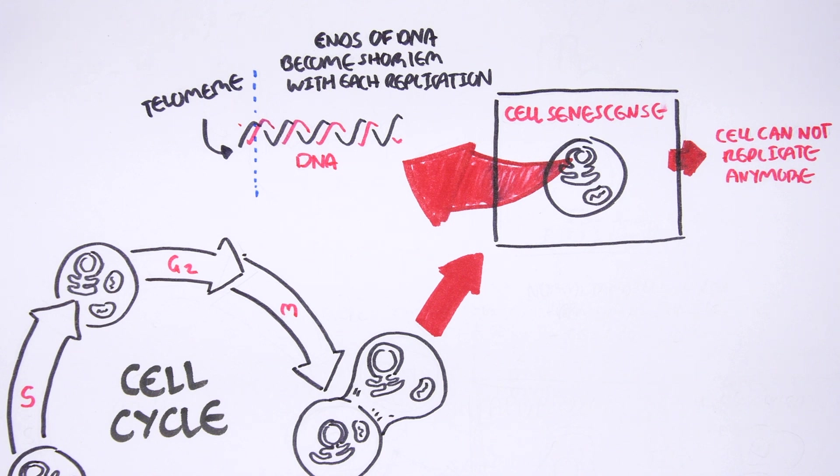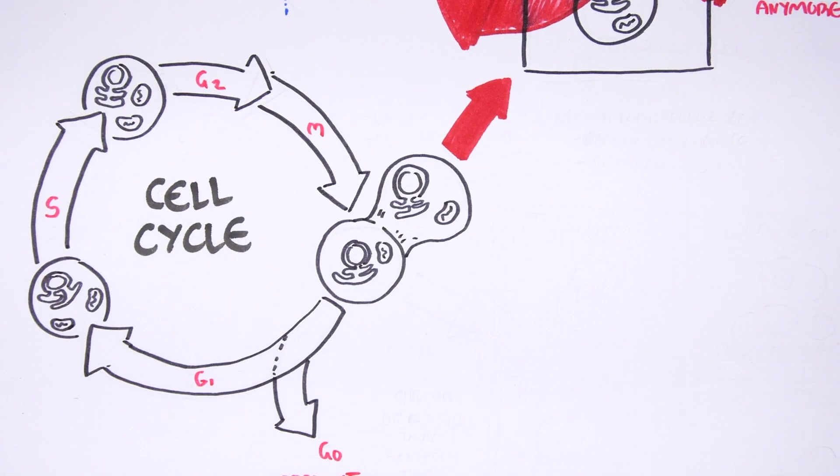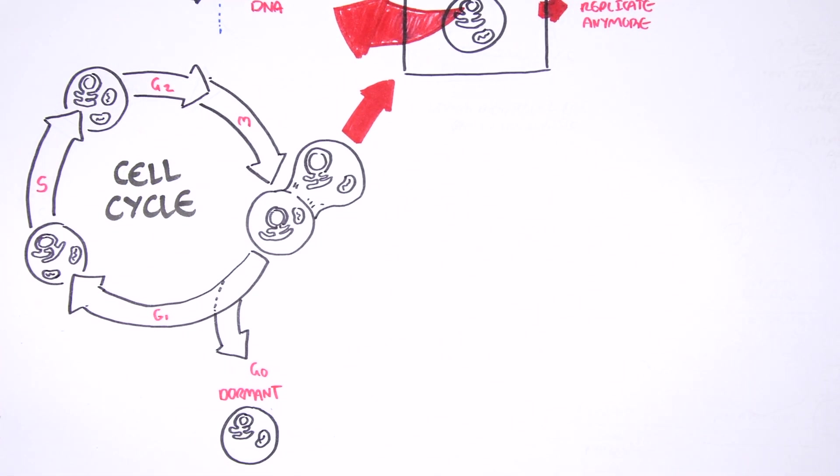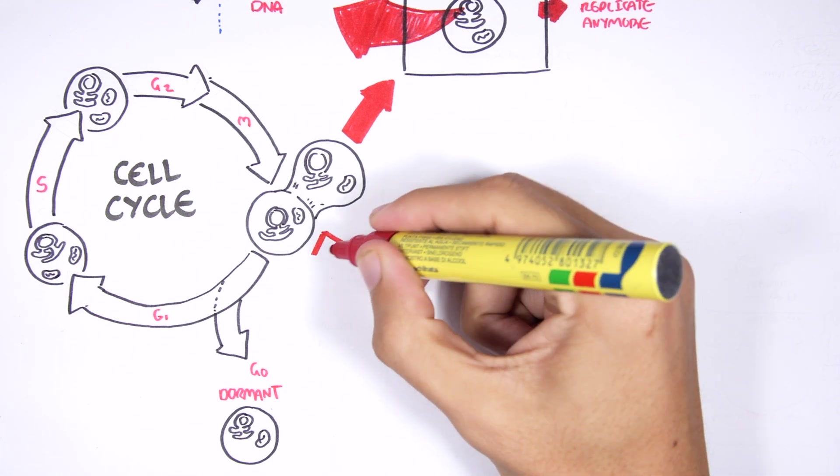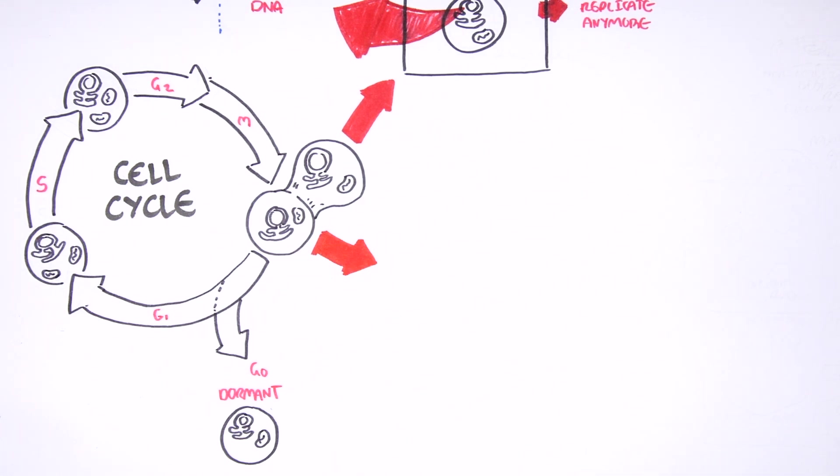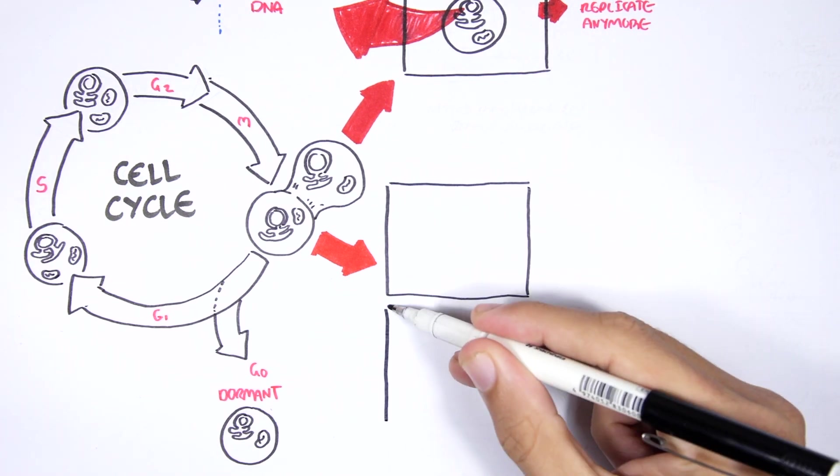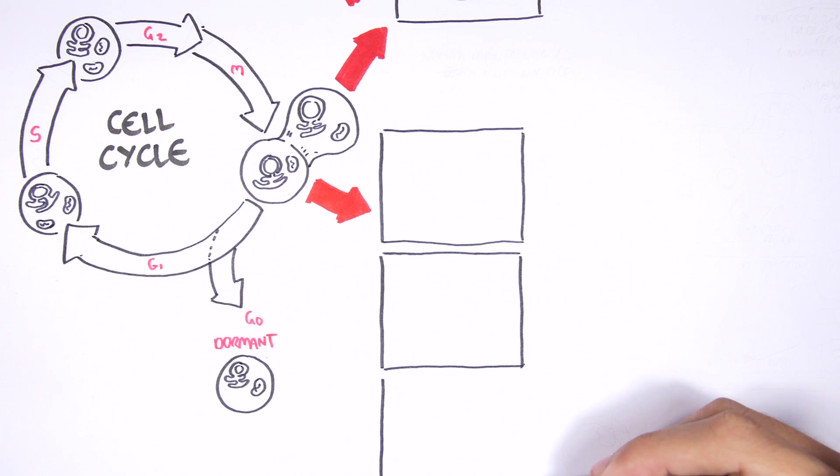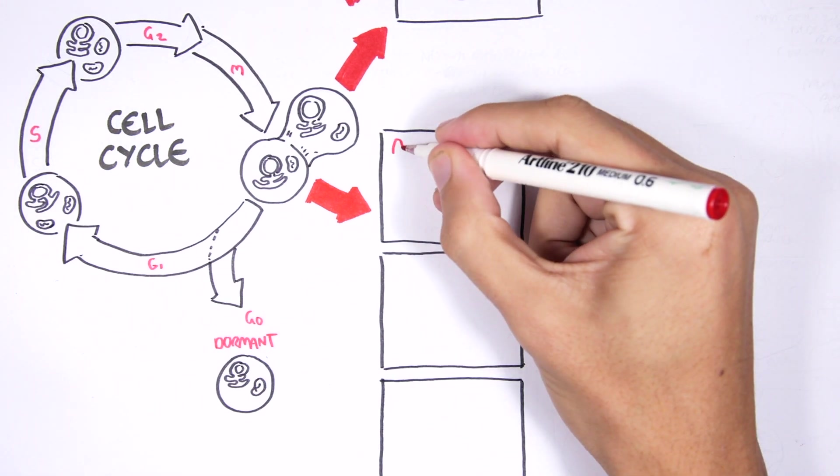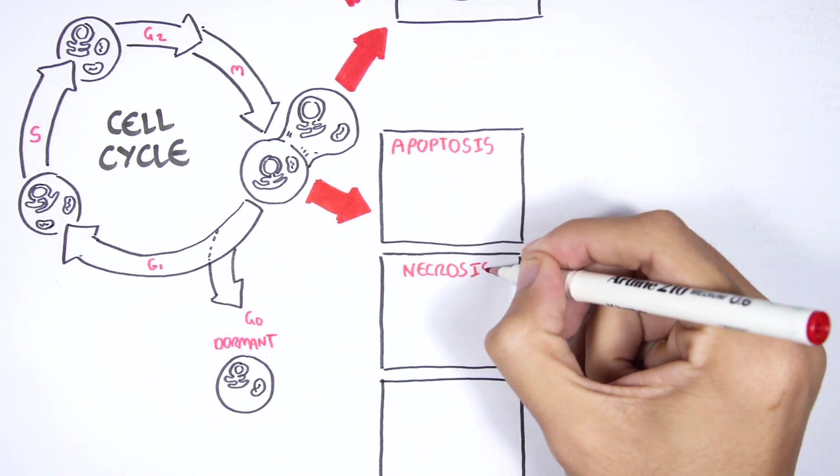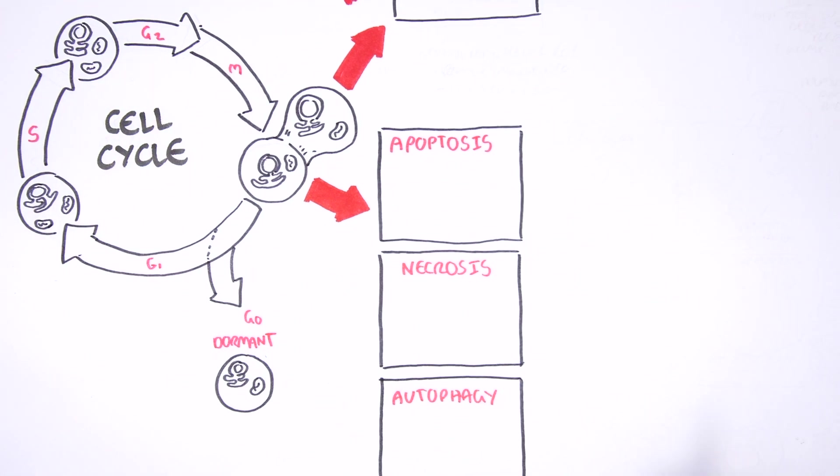Anyways, that's important to know that you have mitotic cells and post-mitotic cells. But also you have germ cells which are your sperm and your eggs. Anyway, so these cells, any cells can actually undergo a few fates during its course. It can undergo apoptosis, necrosis, and autophagy.